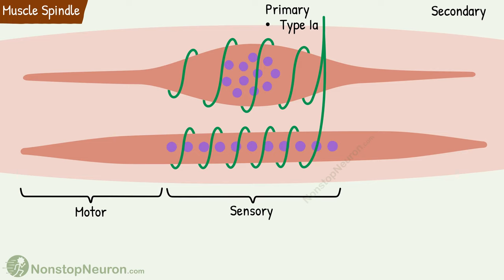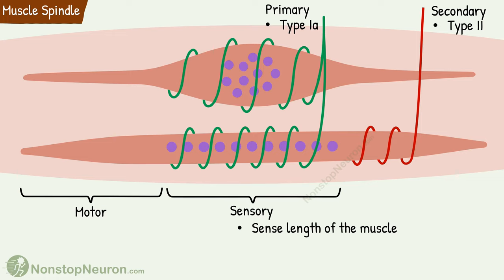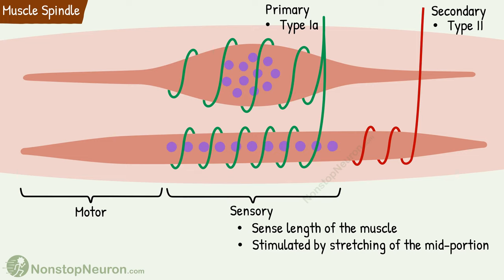Now the secondary endings mainly innervate nuclear chain fibers on one or both sides of the primary ending. They are formed by type 2 fibers. All these sensory endings sense the length of the muscle and changes in the length. They are stimulated by stretching of the mid portion of the muscle spindle. This stretching might result either from the lengthening of the entire muscle or contraction of only the end portion of the muscle spindle. When the muscle spindle is stretched, the firing rate of the sensory neuron increases, and on shortening, the firing decreases.